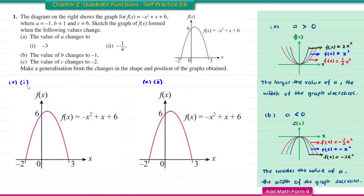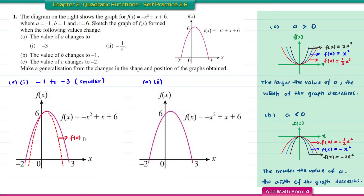For question a1, the value of a changes from -1 to -3, which means the value of a is getting smaller. Therefore the width of the graph decreases. This is the graph of f(x) = -3x² + x + 6. Both functions have the y-intercept equal to 6, so both graphs will intersect f(x) at the point 6.